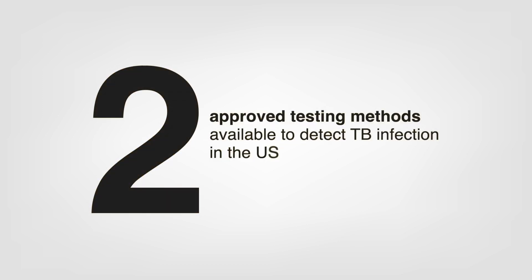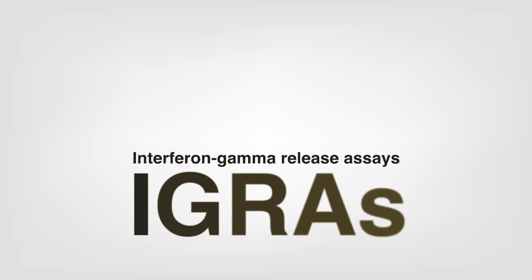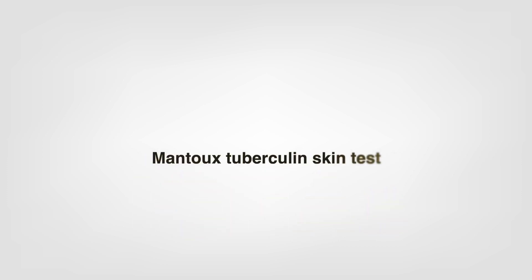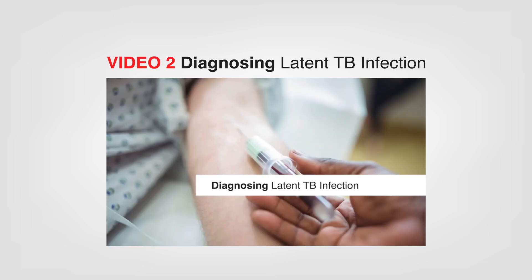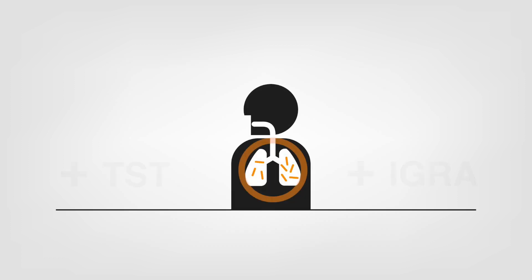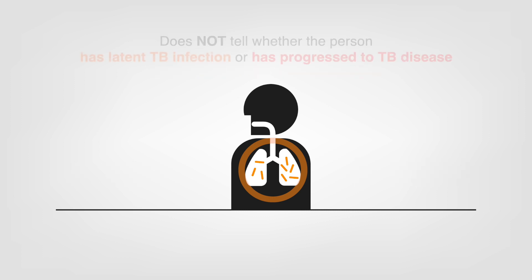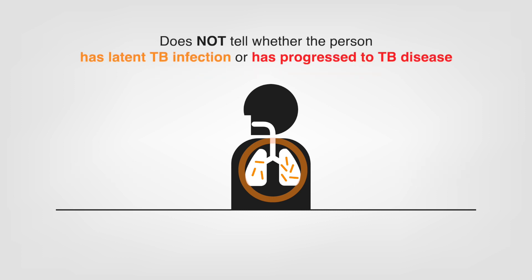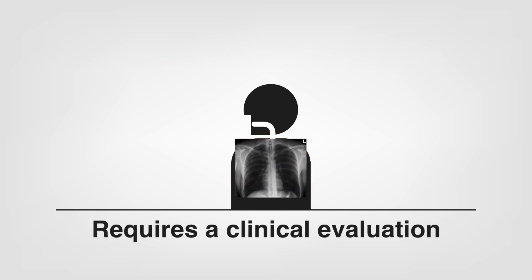There are two approved testing methods available to detect TB infection in the US: interferon gamma release assays, also called IGRAs, and the Mantoux tuberculin skin test, also called the TST. These tests will be discussed in more detail in the video on diagnosis. Remember, a positive test for TB infection tells only if a person has been infected with TB bacteria. It doesn't tell whether the person has latent TB infection or has progressed to TB disease, which requires a clinical evaluation that includes a chest x-ray and physical exam.